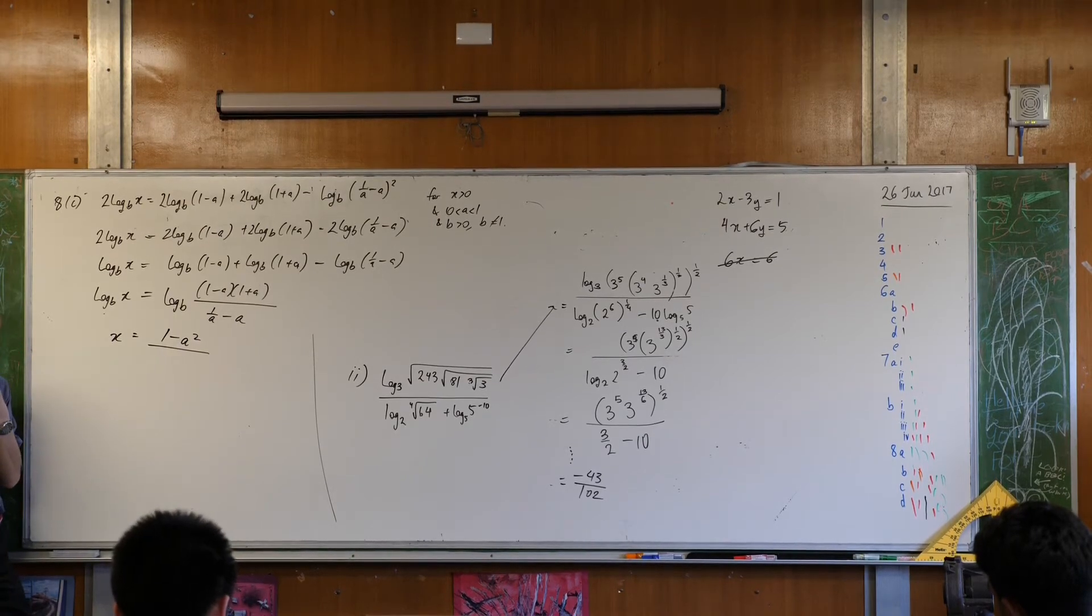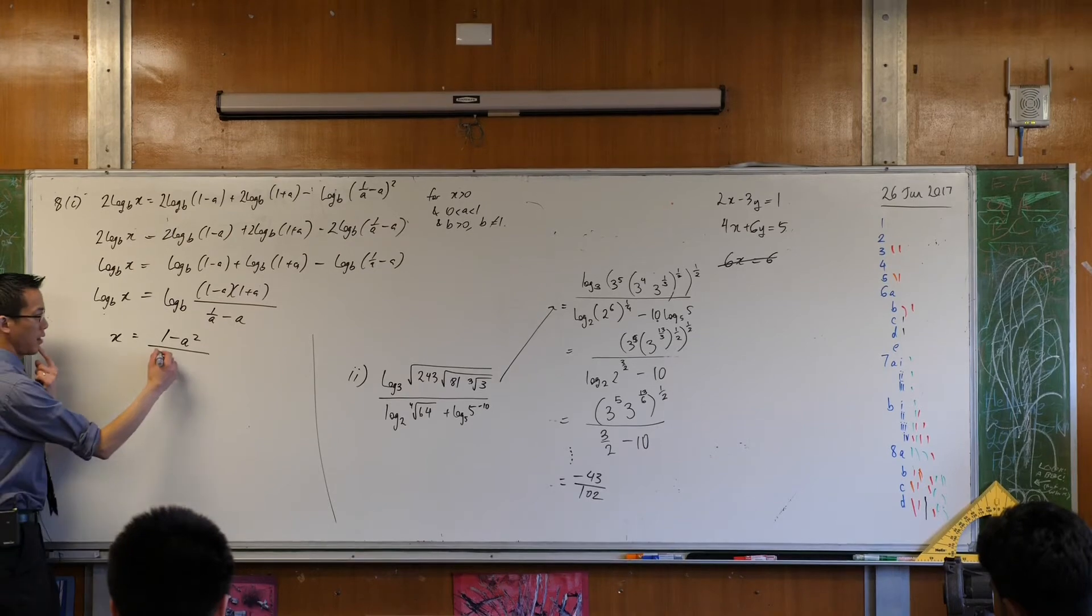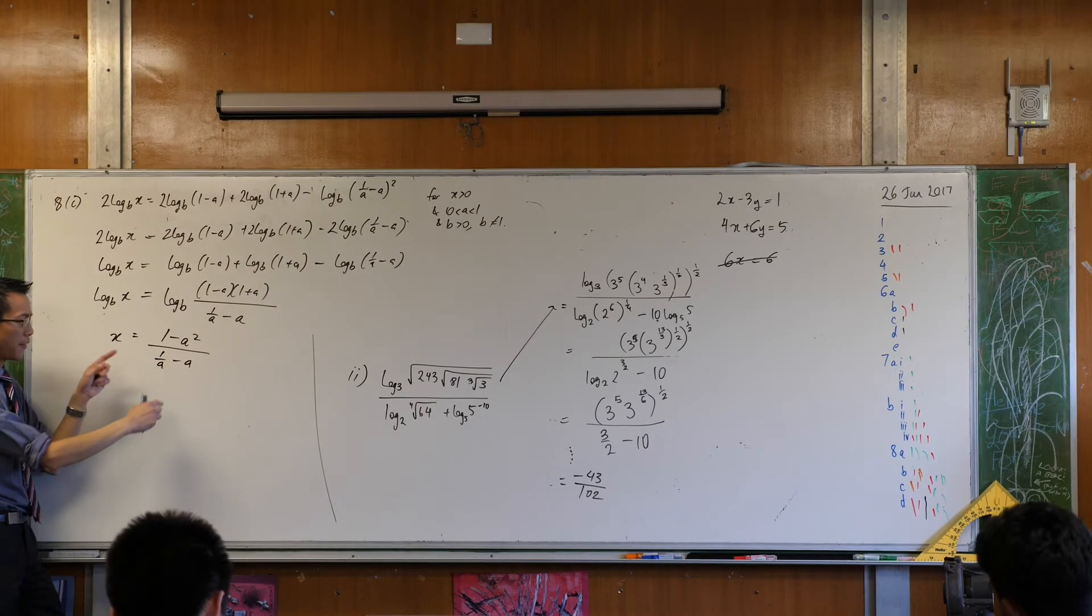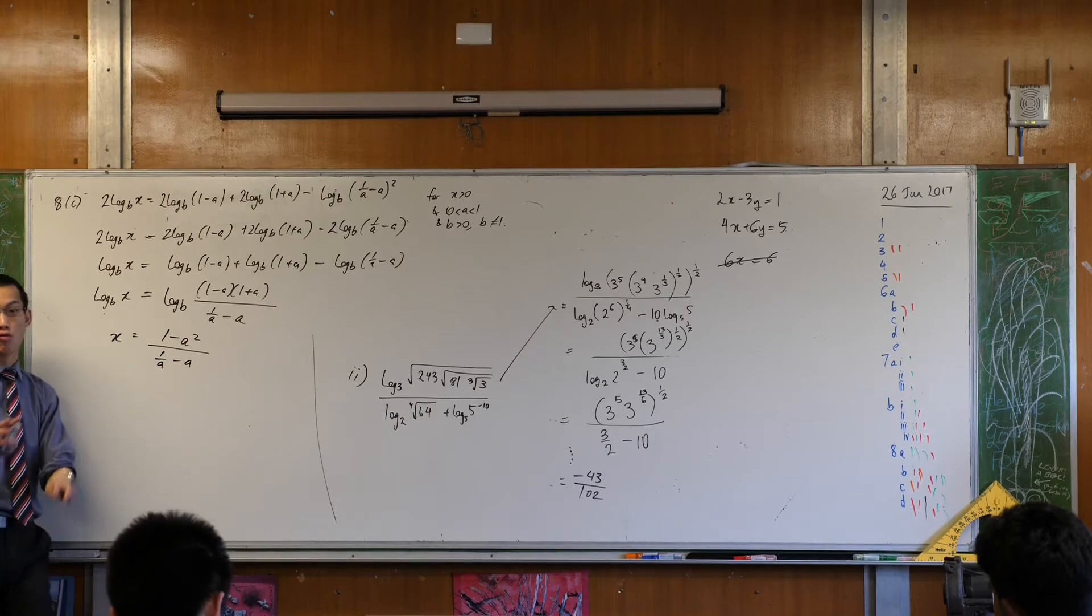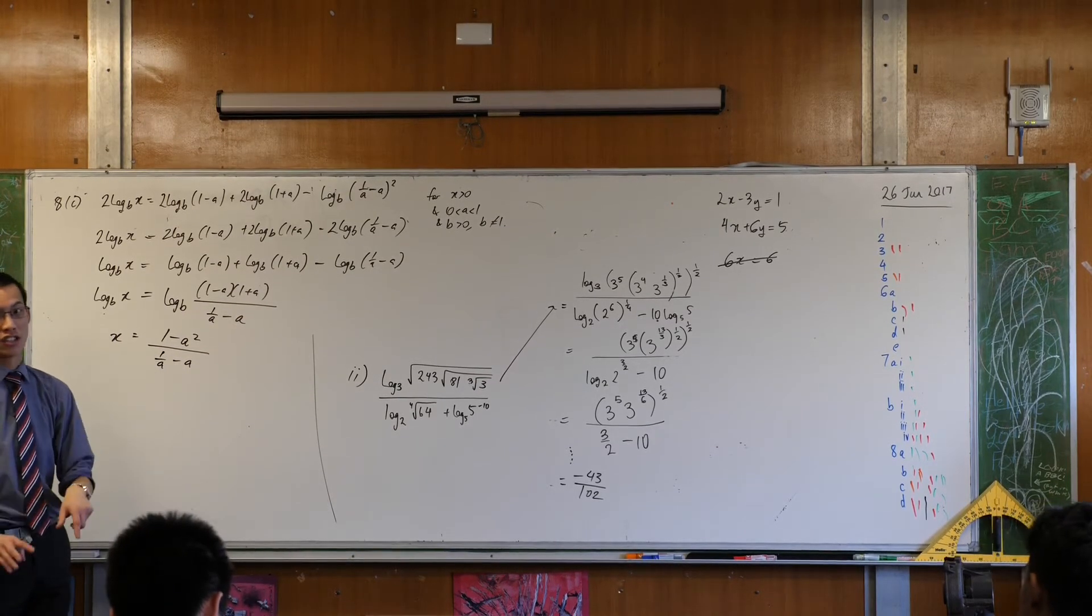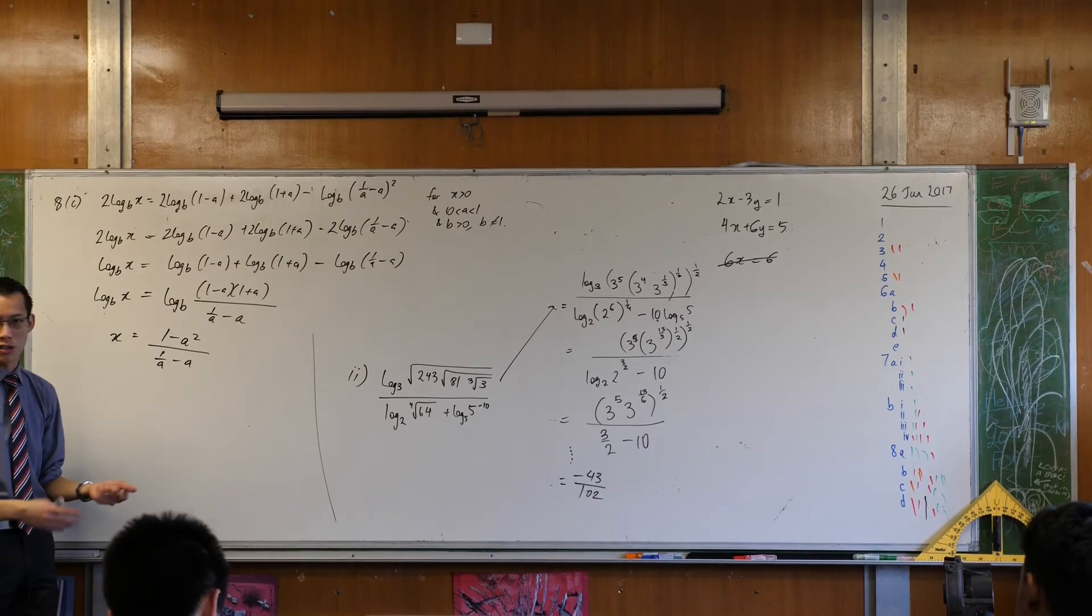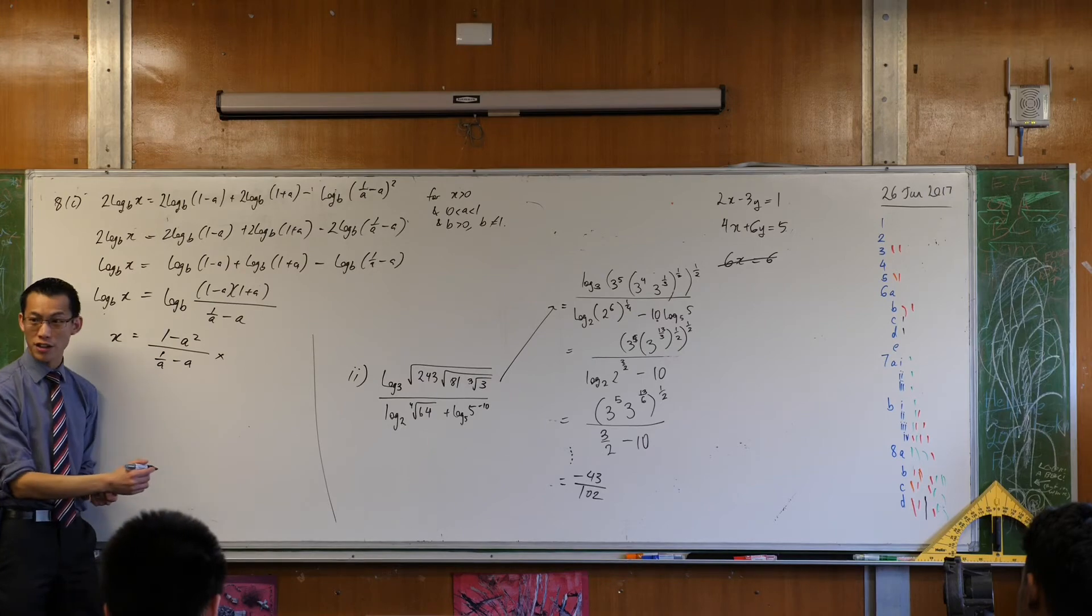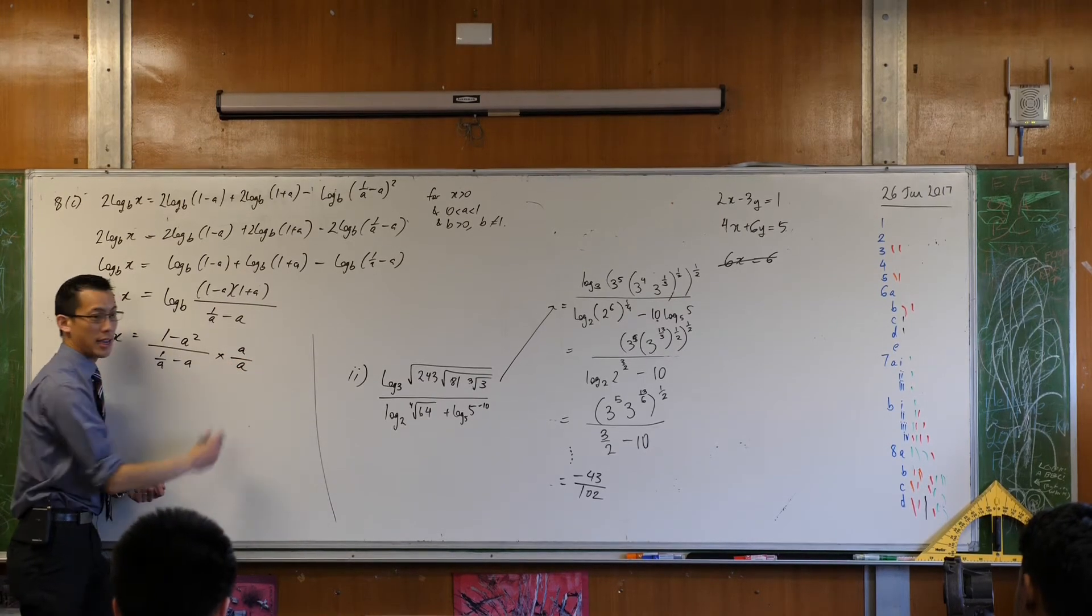You can put these on a common denominator together. But if you do that, you're still going to have a fraction of fractions. There's nothing wrong with it. I just think for me, mentally, I want to get rid of fractions on fractions as quickly as I can. It's just easier to work with. So for me, the easy thing to do is to multiply this whole fraction by a on a.